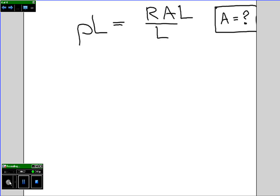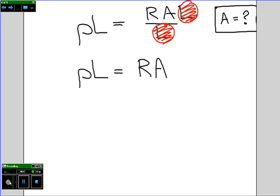Notice that on the right-hand side, we've got L divided by L. These will cancel out. So now we've got rho times L equals R times A.